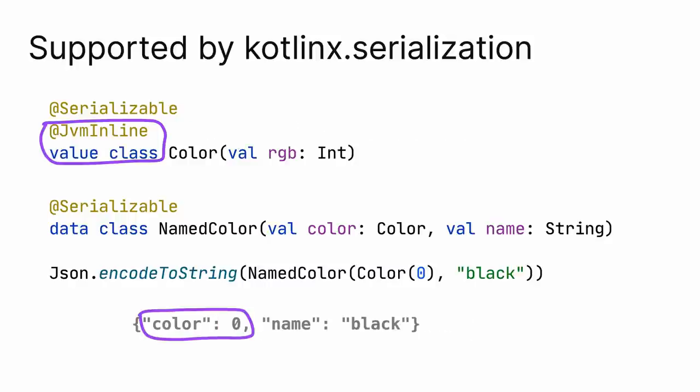For inline classes, the value is encoded directly, and decoded correspondingly. Here, we now defined color as an inline value class, and you can notice that the integer RGB value is serialized directly, as color.